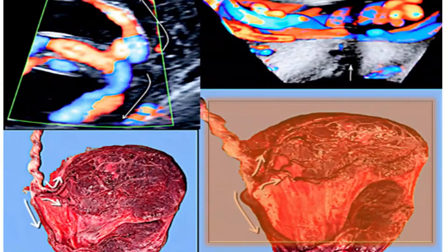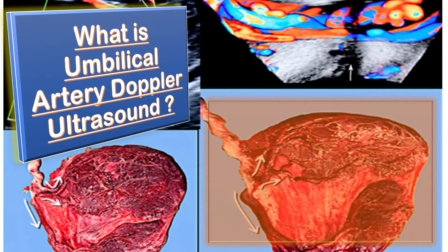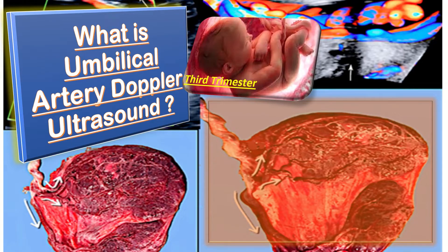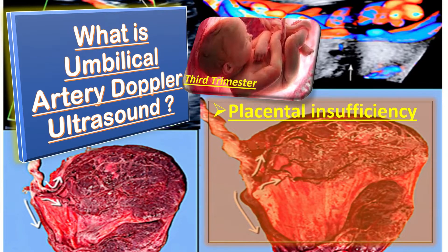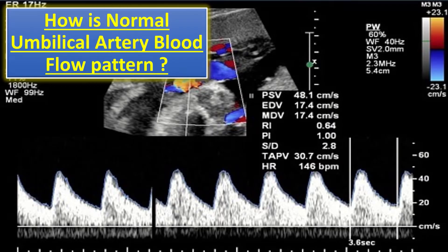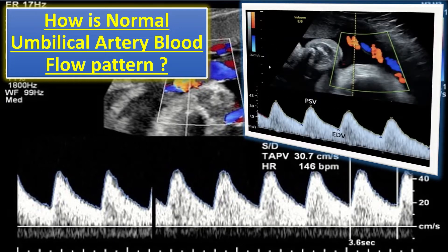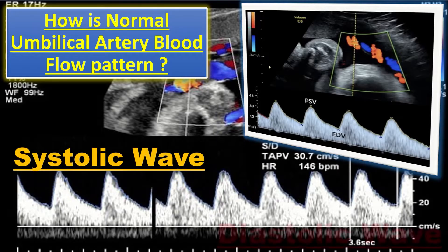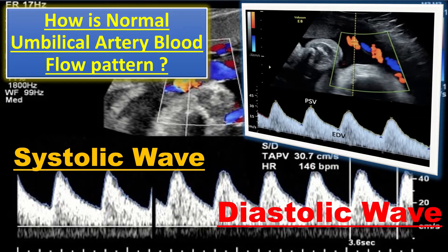So what is umbilical artery Doppler? Umbilical artery Doppler assessment is a specific ultrasound used in the surveillance of fetal well-being in the third trimester of pregnancy. Abnormal umbilical artery Doppler is a marker of placental insufficiency and consequent intrauterine growth retardation or suspected preeclampsia. The blood flow through the umbilical artery gives a typical low-resistance flow pattern demonstrating continuous forward flow during the systolic wave as well as the diastolic wave, though at a reduced rate, throughout the cardiac cycle.